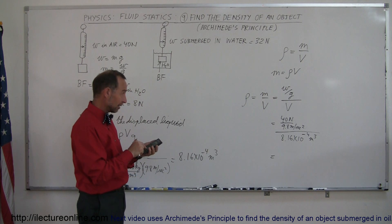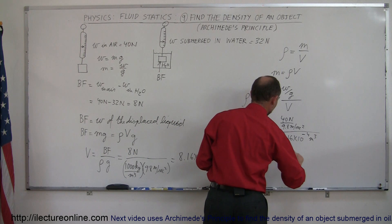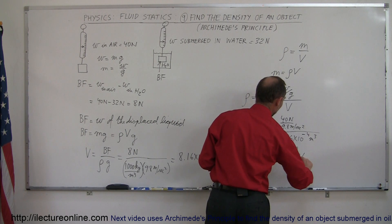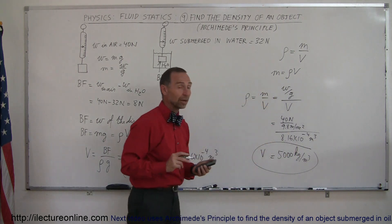So we take the inverse of that, multiply that times 40, and divide it by 9.8, and that gives us 5,000. So this is 5,000 kilograms per cubic meter, and that is the volume that we were looking for, the volume of the object.